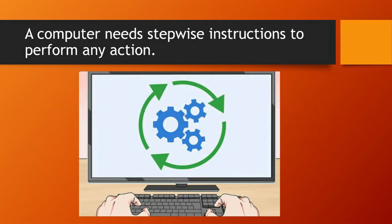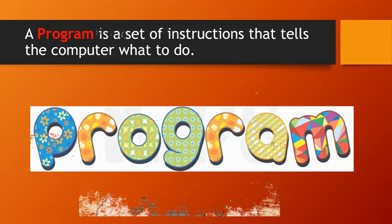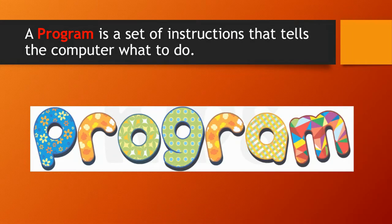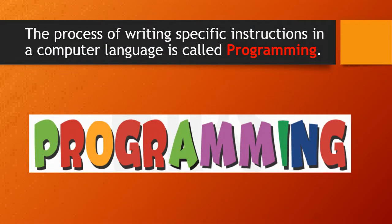A computer needs stepwise instructions to perform any action. What is a program? A program is a set of instructions that tells the computer what to do. If we want to make the computer work according to us, we give it a set of instructions, and that set of instructions is called a program. The process of writing instructions in a computer language is called programming. C, C++ — these are programming languages using which we make a set of instructions to make the computer work.